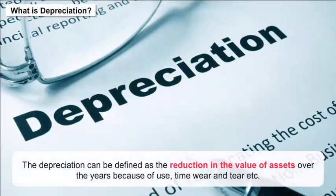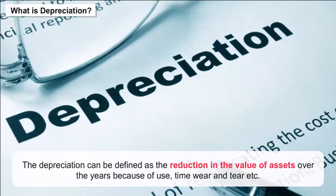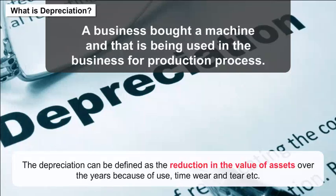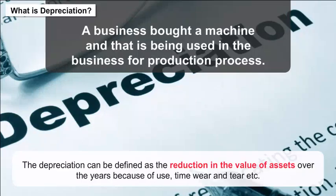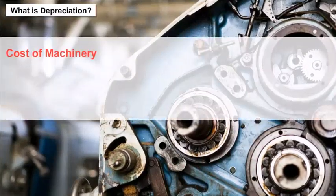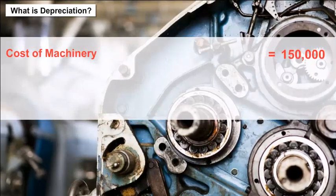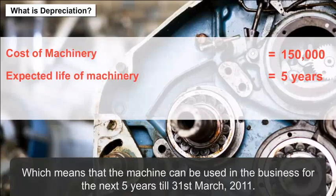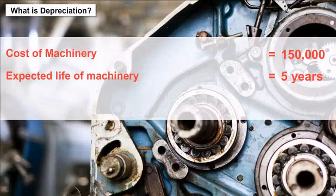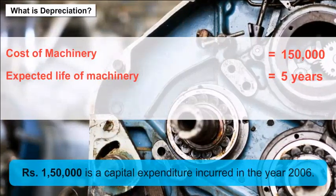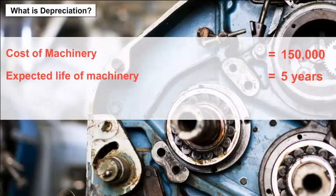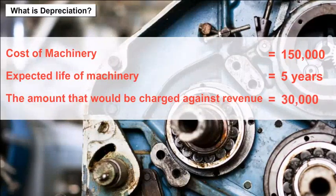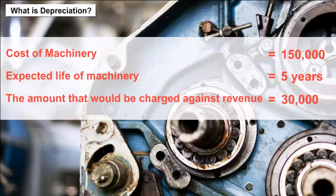What is Depreciation? Depreciation can be defined as the reduction in the value of assets over the years because of use, time, wear and tear, etc. For example, a business bought a machine that is being used in the business for the production process — the value of that machine reduces with usage. For instance, a machine bought for Rs. 1,50,000 on 1st April 2006, with a useful life of 5 years till 31st March 2011: Rs. 1,50,000 is a capital expenditure, but instead of charging the whole amount in the current period, one-fifth (Rs. 30,000) would be charged against revenue for year 2006.